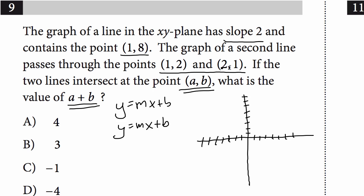This one hits points (1, 2) and (2, 1). So what's our slope there? We go down one over one, down one over one, down one over one.